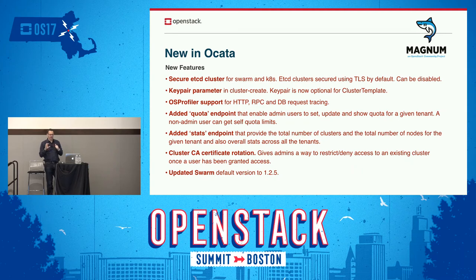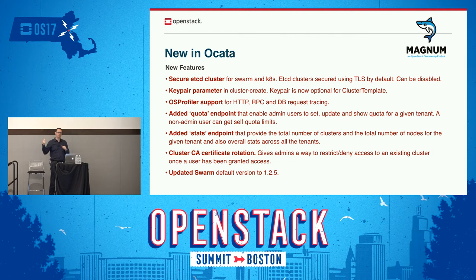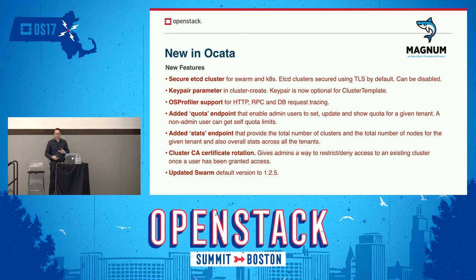You're now able to rotate the certificate authority. When Magnum creates a new cluster, it establishes an SSL certificate authority and signs certificates against that CA. If you want to revoke all TLS certificates, you rotate the CA, which makes all certificates invalid. You can then run one command to establish a new certificate. This is how you handle the dismissal of an employee or when someone leaves the group. We also updated the version of Swarm supported in the Swarm driver.